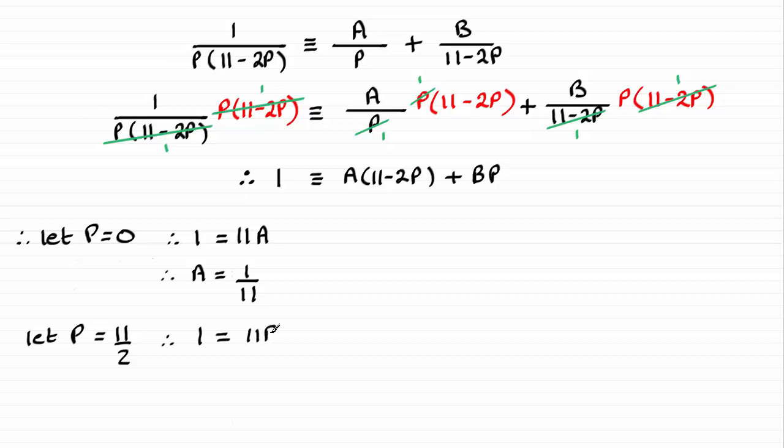So that's 11B over 2. And by rearranging this, just multiplying both sides by 2 and dividing by 11, we end up with B equaling 2 over 11, 2 elevenths.